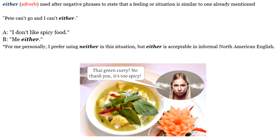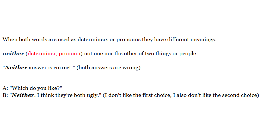When both words are used as determiners or pronouns, they have different meanings. Neither means 'not one nor the other' of two things or people. For example: 'Neither answer is correct' — this means both answers are wrong. 'Which do you like?' 'Neither — I think they're both ugly.' This means I don't like the first choice and I also don't like the second choice.